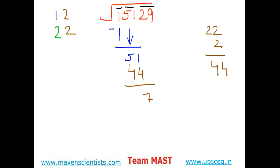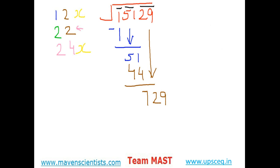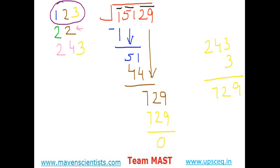Subtract 44 from 51 gives 7; bring the third pair down so the number now is 729. Now repeat the steps again. Double the previous guessed number — the previous guessed number was 2 — so two times two is 4, and bring the previous-to-previous number 2 down as it is. The final step: guess x which when multiplied with 24x gives less than or equal to 729. If x is 3, then 243 times 3 gives exactly 729. The remainder is zero, which means 123 is the perfect square root of 15129.